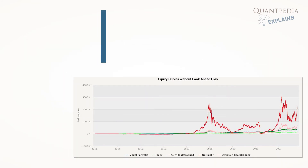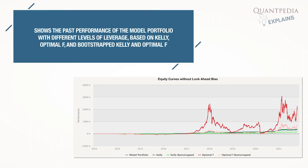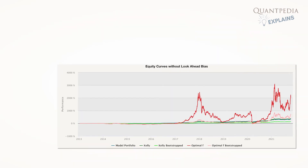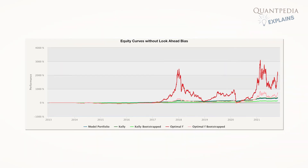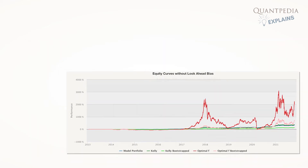The third chart again shows the past performance of the model portfolio with different levels of leverage, based on Kelly, Optimal F, and bootstrapped Kelly and Optimal F. However, this time, equity curves don't contain look-ahead bias, as leverage ratios are recalculated every year based on the past 12-month history of performance.